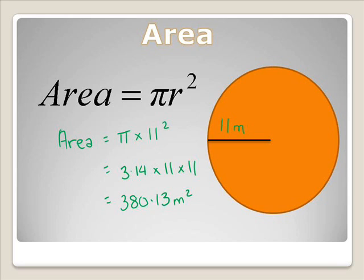When working in area it's just a simple matter. Substituting the radius into that formula pi r squared. Next we'll have a look at the circumference.